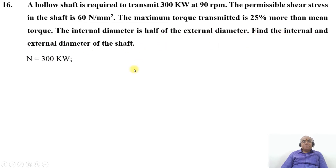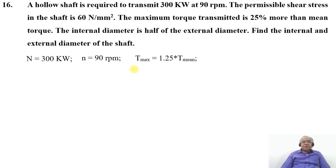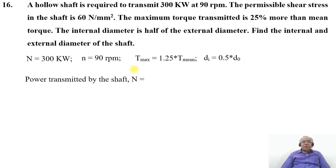The given data: capital N is 300 kW and small n is 90 RPM. The permissible shear stress tau equals 60 N/mm². The maximum torque T_max is 25% greater than T_mean, therefore T_max = 1.25 × T_mean. The internal diameter Di equals 0.5 × Do.